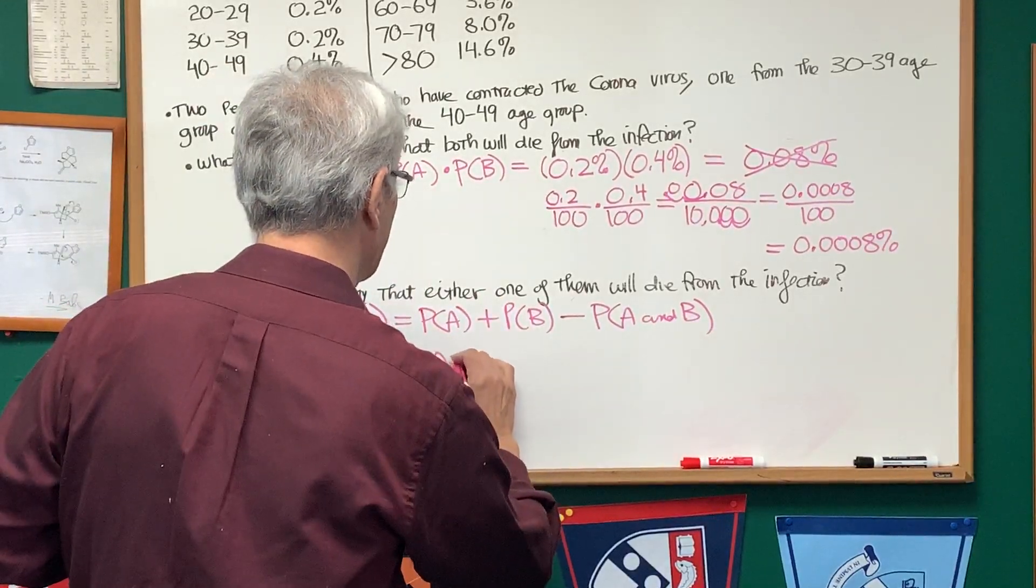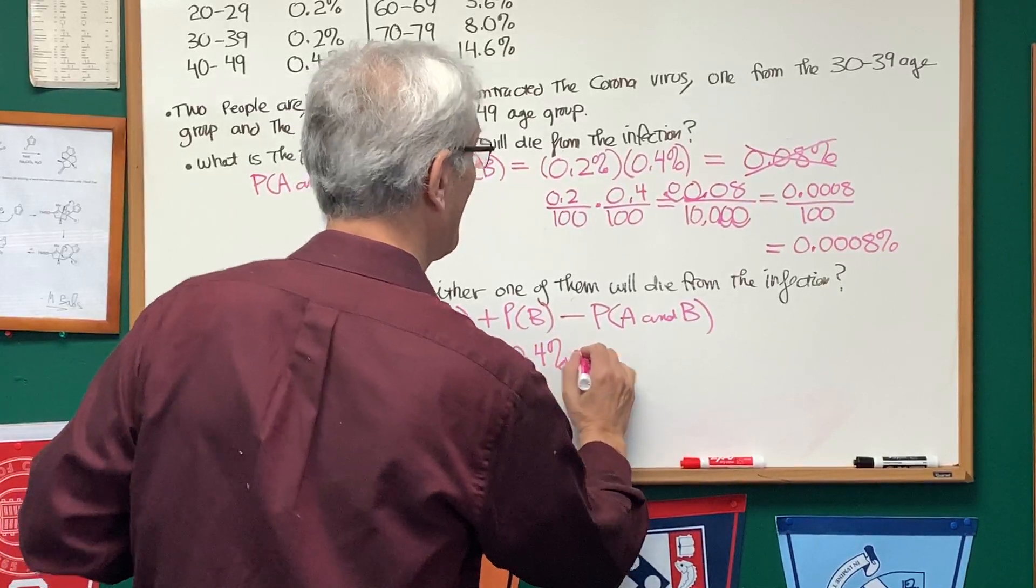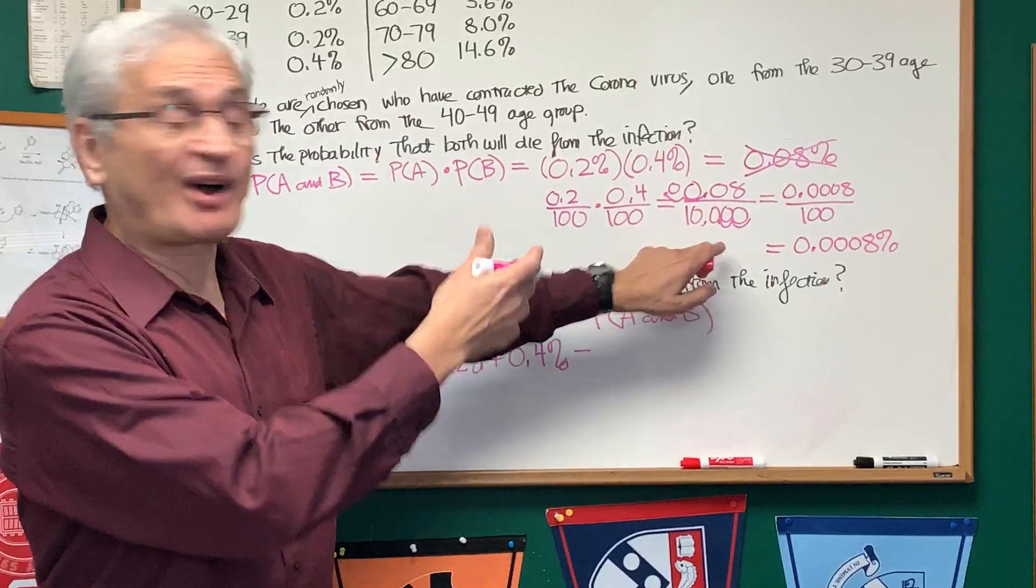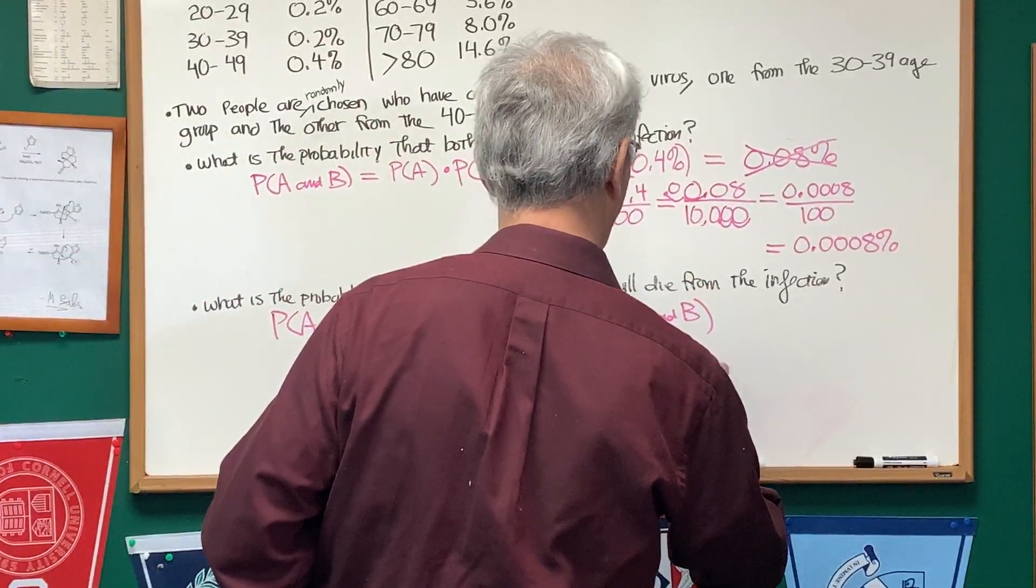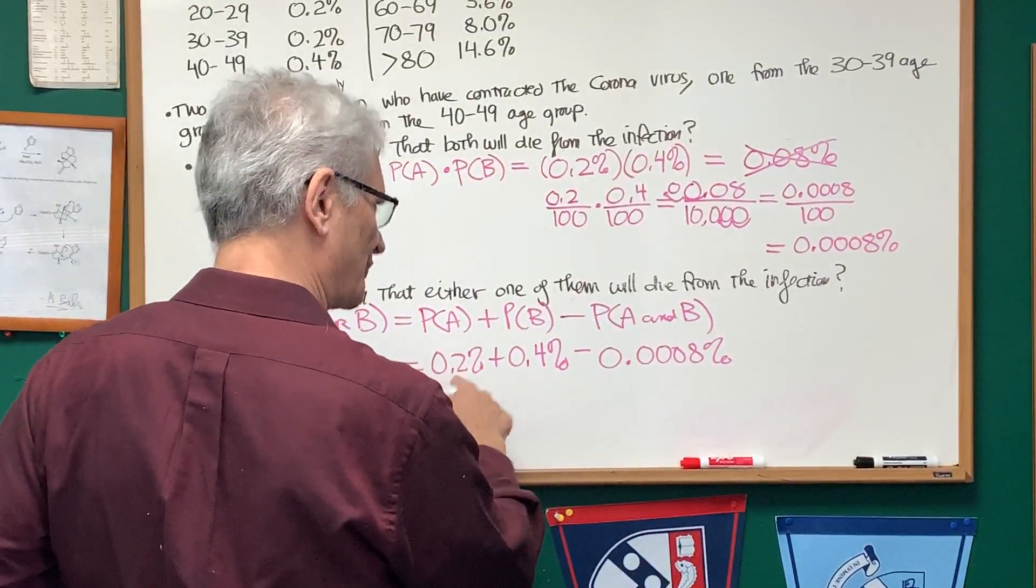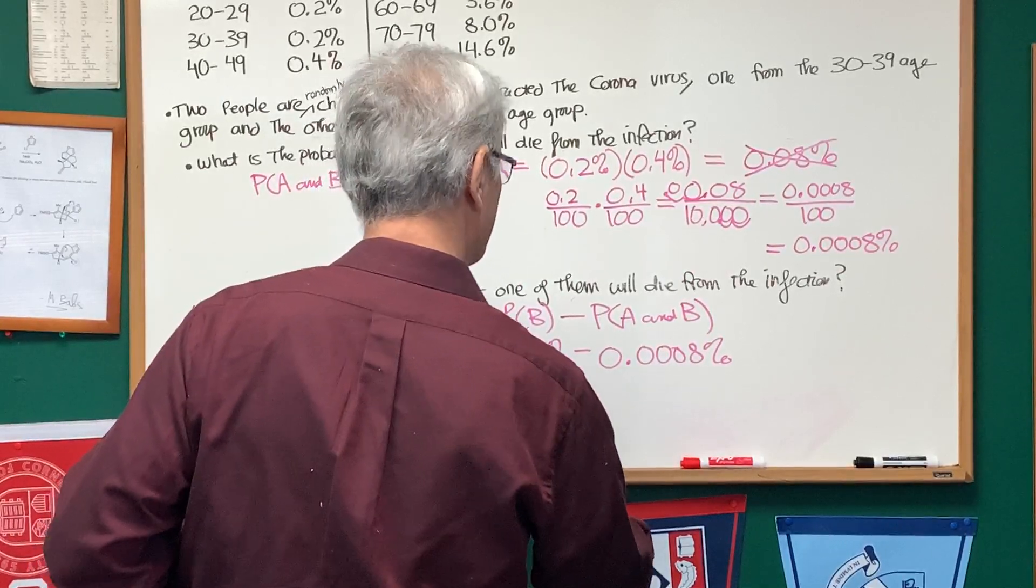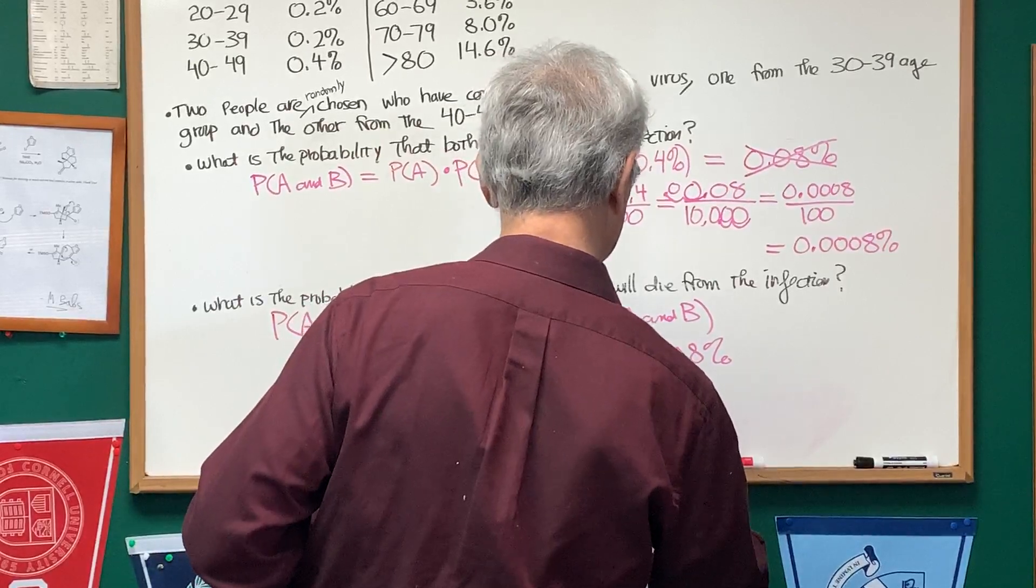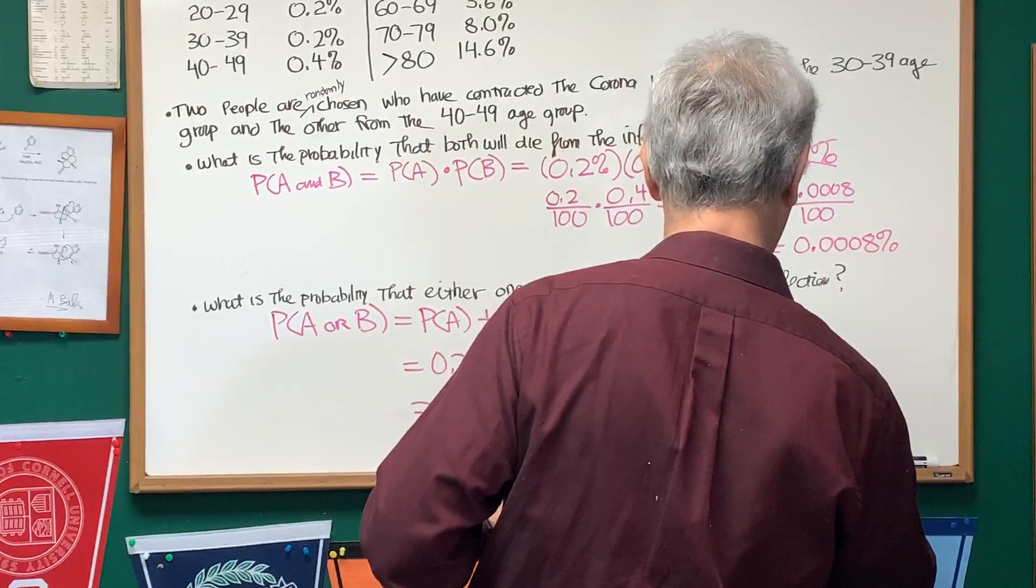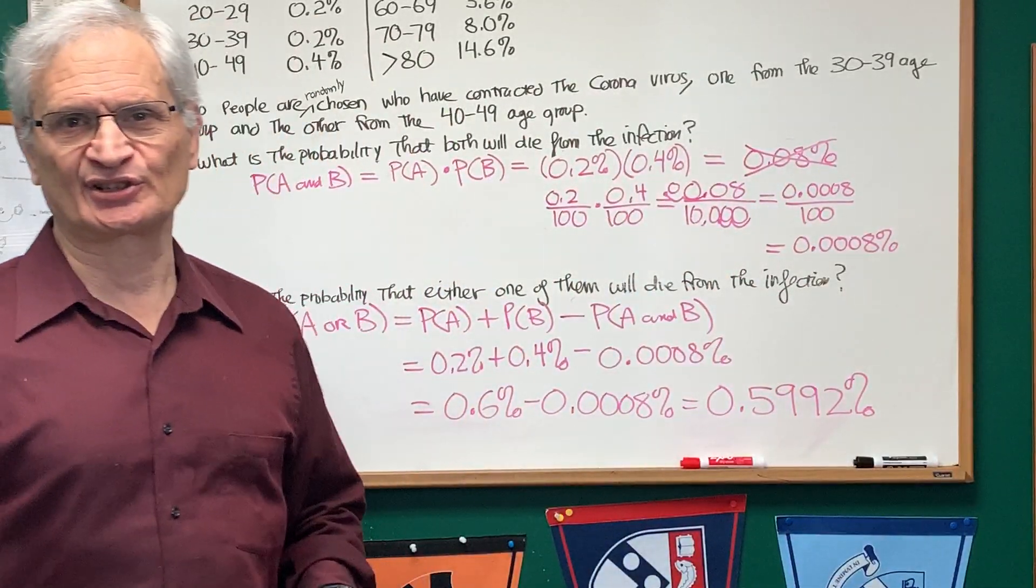The probability of A is 0.2%. The probability of B is 0.4%. And the probability of A and B, we've already figured that out from part A, is 0.0008%. So this is going to be 0.2% plus 0.4% minus 0.0008%, which equals 0.6% minus 0.0008%, and that's going to give us 0.5992%. And there's our solution to the second part.